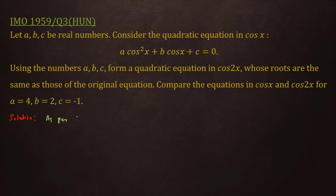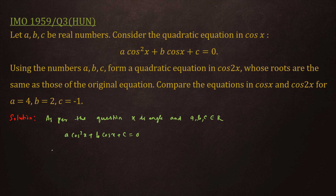Now let's find the solution. As per the question, x is an angle and A, B, C belong to ℝ. The quadratic equation in cos x is given as A cos²x + B cos x + C = 0. This equation can be written as A cos²x + C = −B cos x.